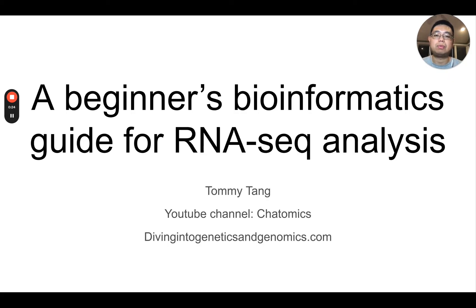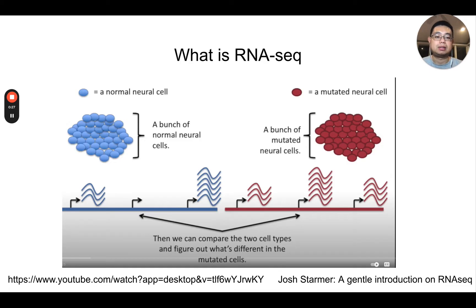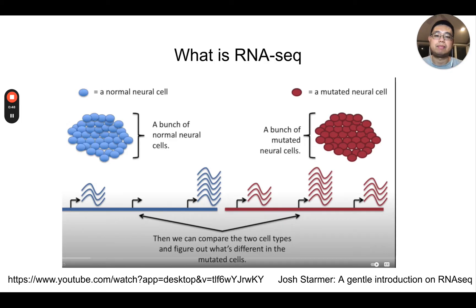So first of all, what is RNA sequencing? If you don't know what RNA sequencing is, I highly recommend this video by George Starmer — a gentle introduction to RNA sequencing. I also followed the slides from his video. According to the name, RNA sequencing is sequencing the RNA. It's a technology to measure gene expression level for all the genes in the genome. In the human genome we have 20,000 genes, so it can sequence all genes and measure their expression levels.